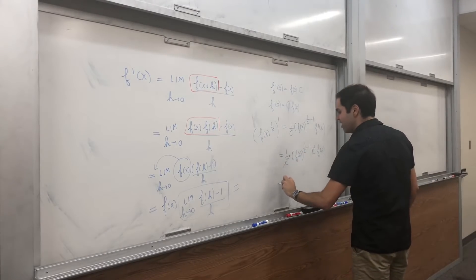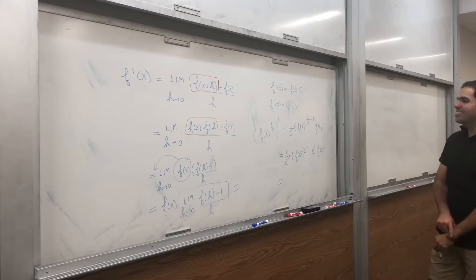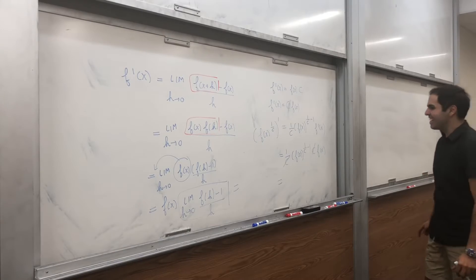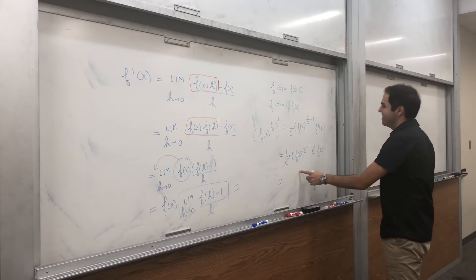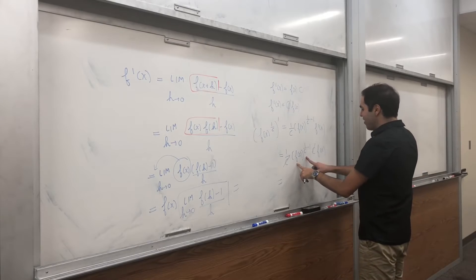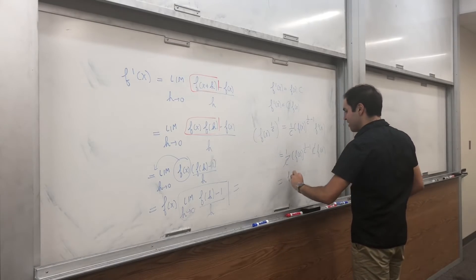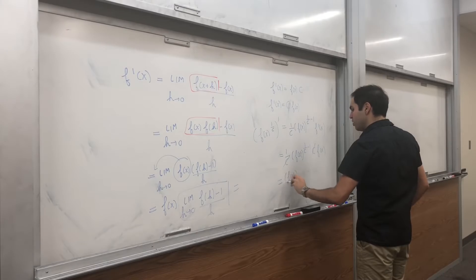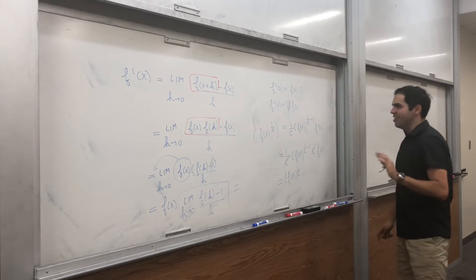The c's cancel out. I guess this function is decreased. And then all we get is just f of x to the 1 over c. Very good.